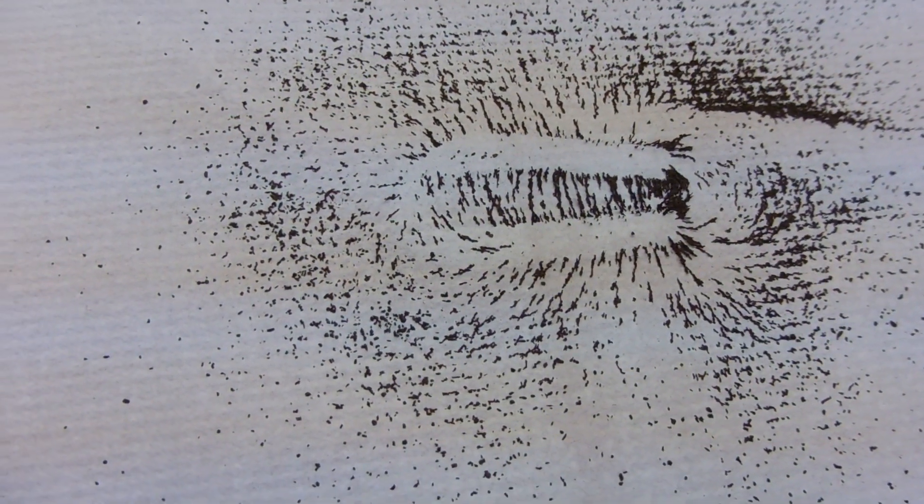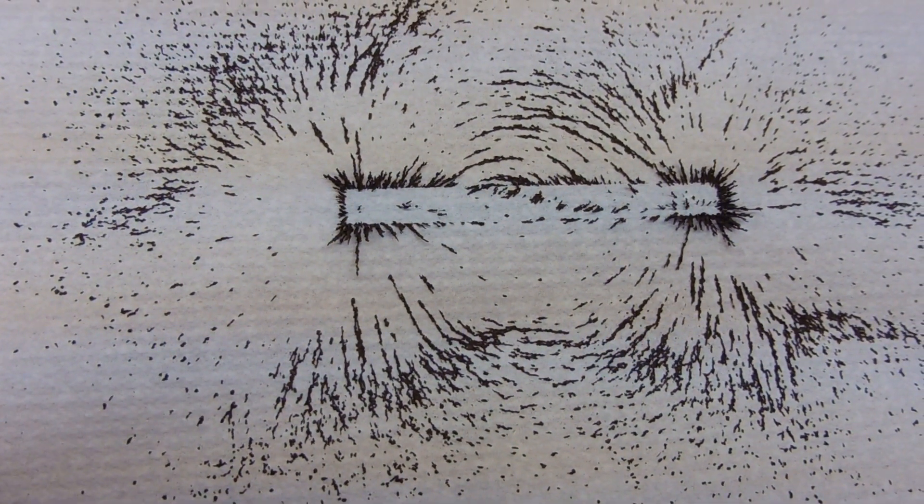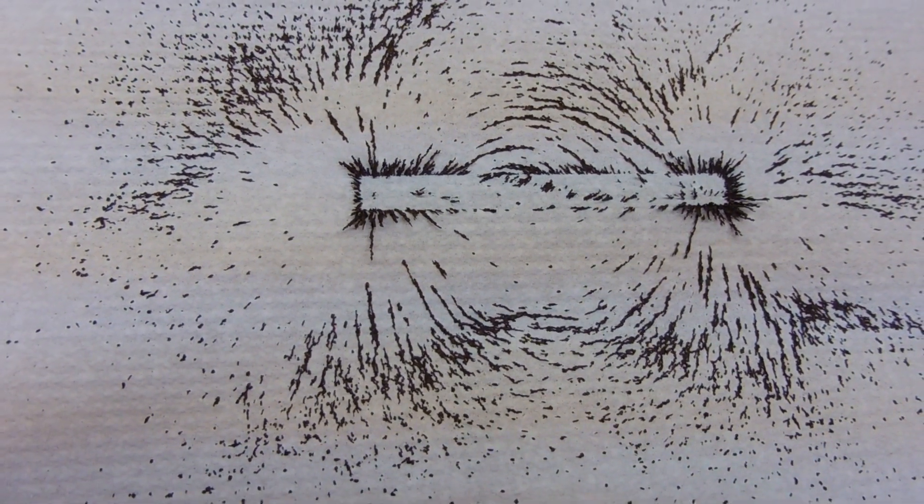So these are the magnetic field lines of a horseshoe magnet and these are the magnetic field lines around a bar magnet. Thank you for watching.